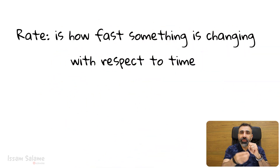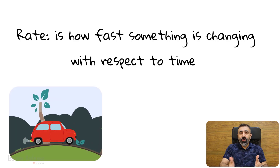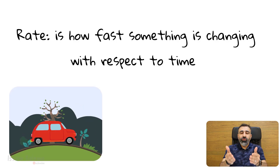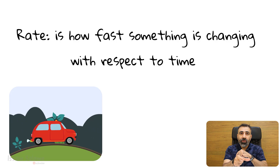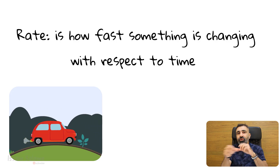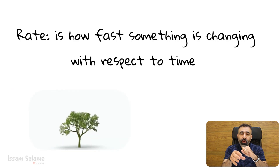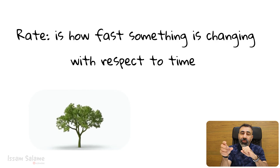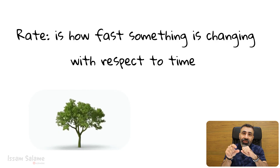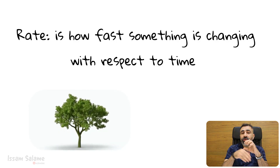For example, speed is a rate. If I want to measure the speed of a car, we have to measure the distance covered by that car within a certain time. If I want to measure the growth of a tree, we have to measure how its height is changing with respect to time.